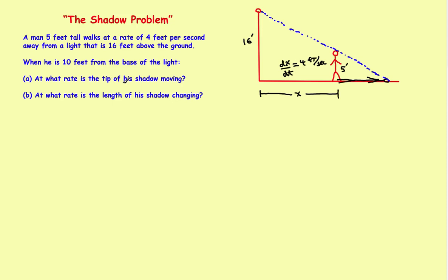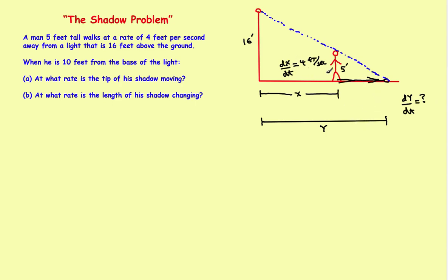The first question asks: at what rate is the tip of his shadow moving? The tip of the shadow is the full distance from the base of the pole all the way out, and we'll call that y. So y is the distance from the pole to the tip of the shadow. What the first question is asking for is dy/dt. So we've labeled the things that we know and the things that we don't know.